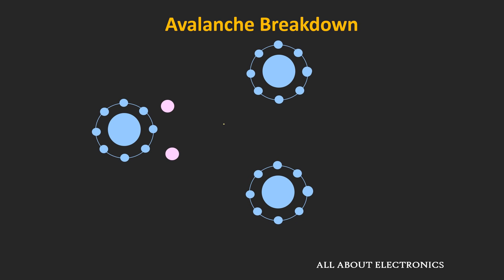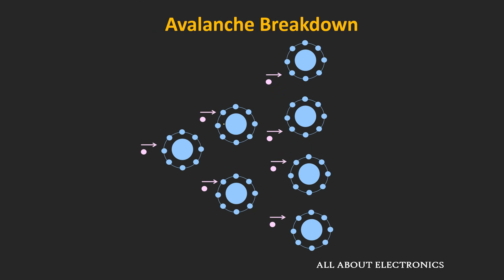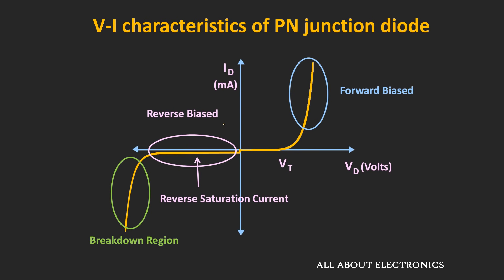Under the influence of the electric field, these two electrons can collide with two more atoms and knock out two more electrons. Similarly, those four electrons will again collide with four more atoms and knock out four more electrons. Due to this chain of collisions, the number of free charge carriers in the depletion region increases drastically, and we see a sudden jump in the reverse saturation current. This effect is known as the avalanche breakdown effect, and the voltage after which it occurs is known as the breakdown voltage.